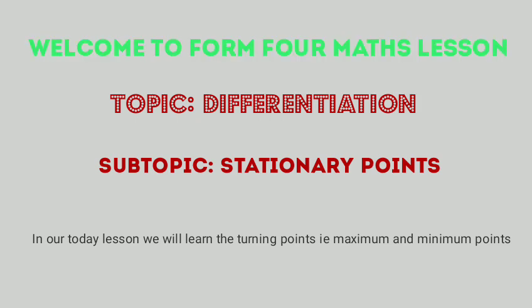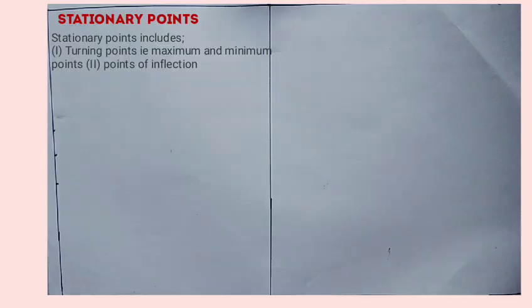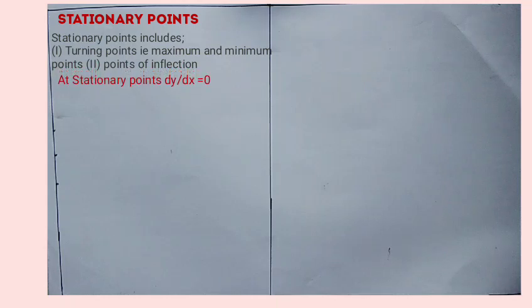Stationary points include turning points. The turning points can be maximum points or minimum points. And we also have points of inflection. The key concept under stationary points is that the gradient function, which is dy over dx, is equal to 0. At stationary points, dy over dx is equal to 0.